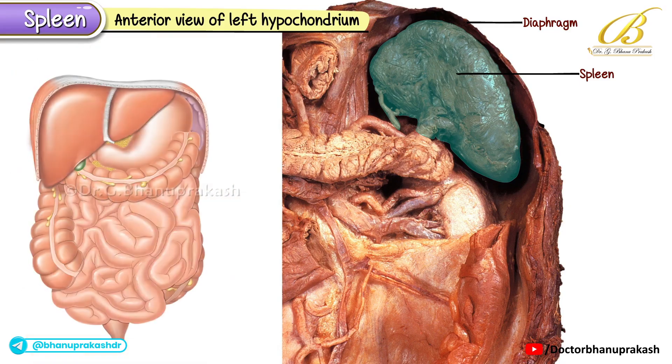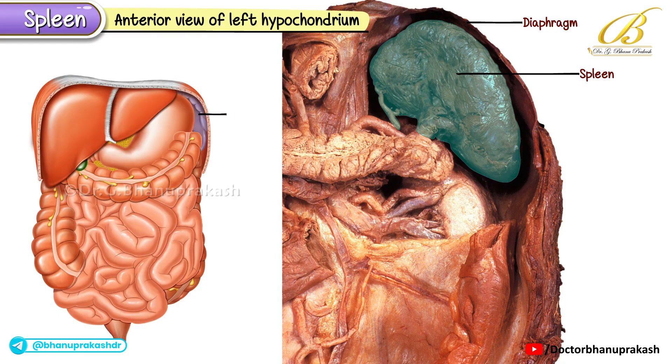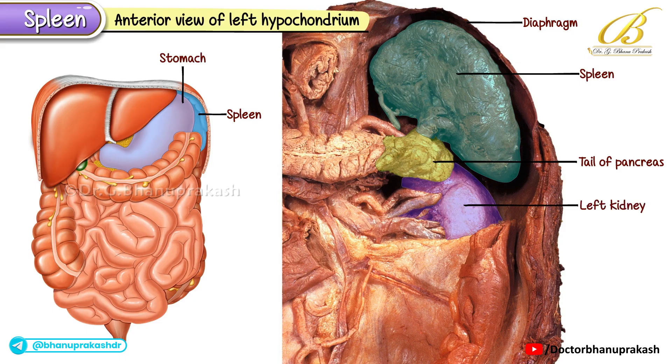On its visceral surface, the spleen is closely related to the stomach, the tail of the pancreas, and the left kidney.